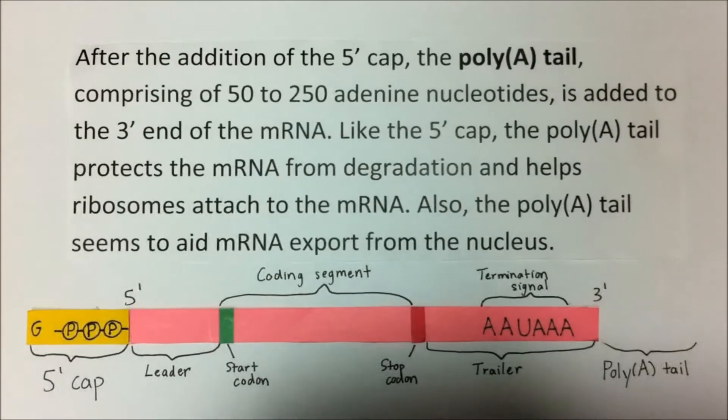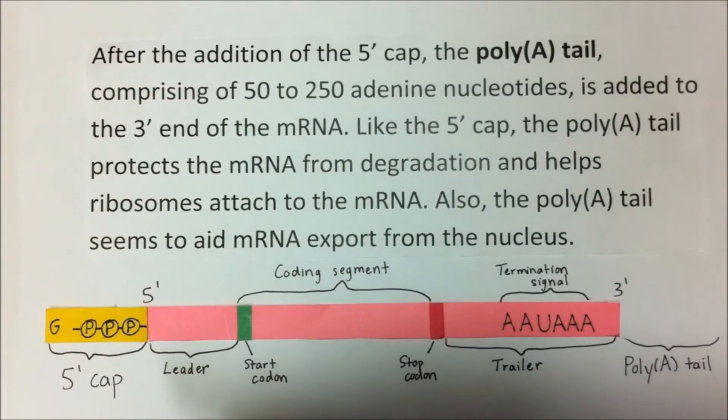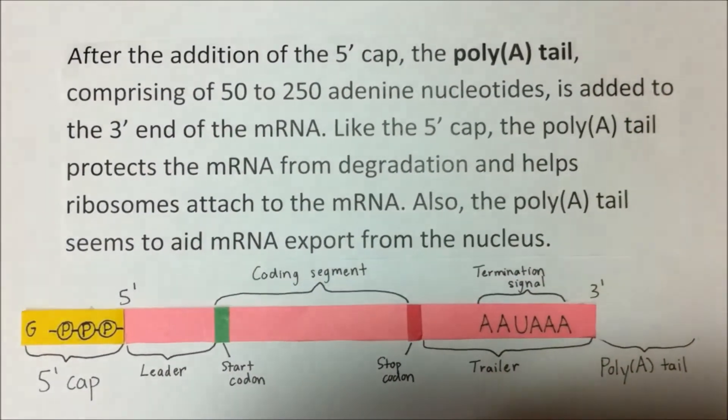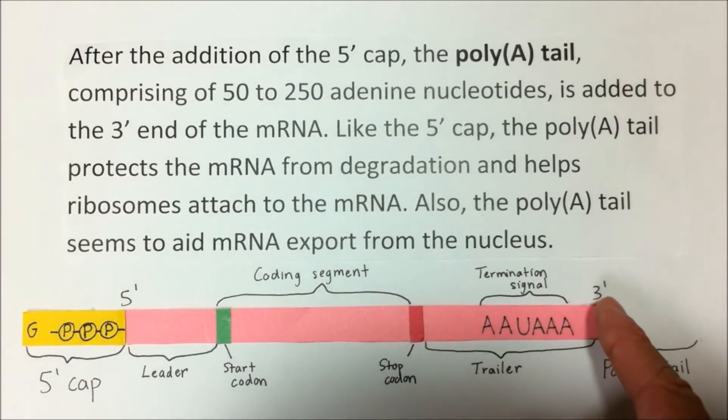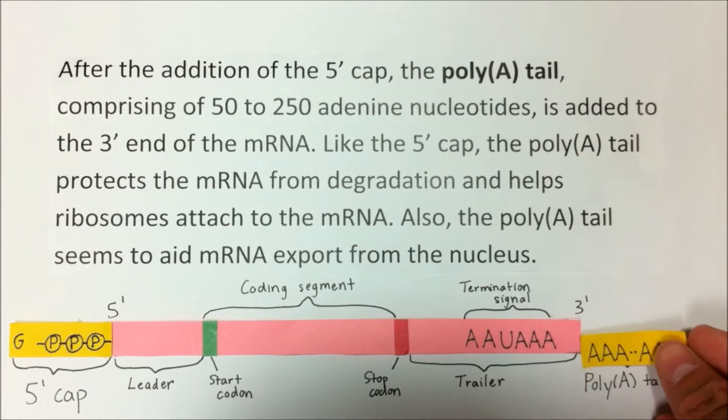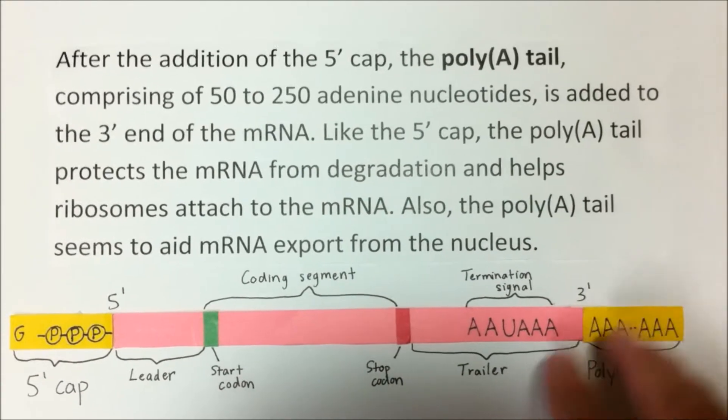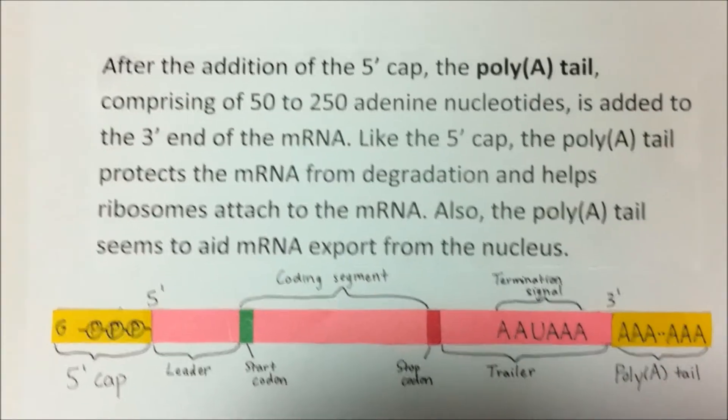After addition of the 5' cap, the poly-A tail comprising of 50-250 adenine nucleotides is added to the 3' end of the mRNA. Like the 5' cap, the poly-A tail protects the mRNA from degradation and helps ribosomes attach to the mRNA.